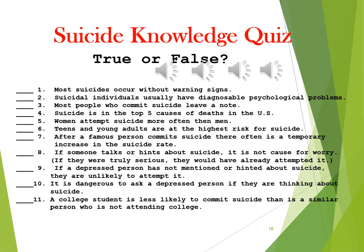Suicidal people usually have diagnosable psychological problems — that is true. These include mood disorders like major depression or bipolar disorder, but also non-mood disorders like schizophrenia and substance abuse issues. One of the personality disorders we'll discuss has a particularly high risk. It is very typical that the person would have one or more untreated or insufficiently treated mental disorders.